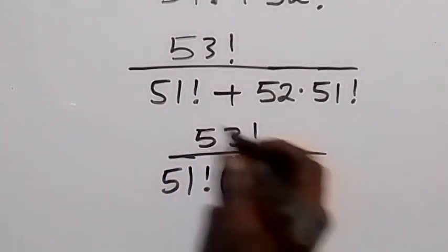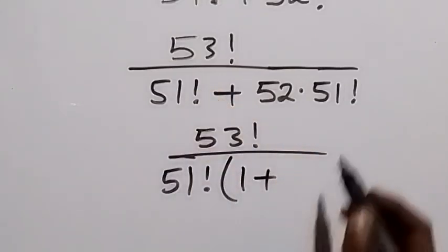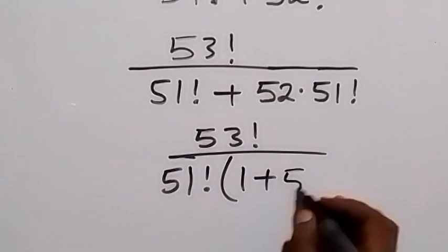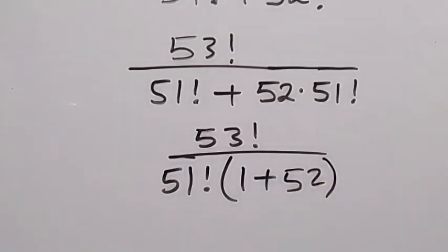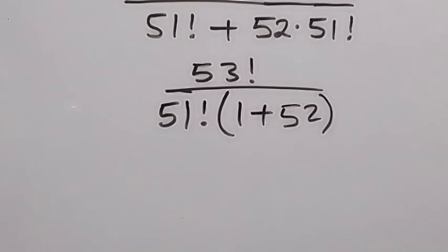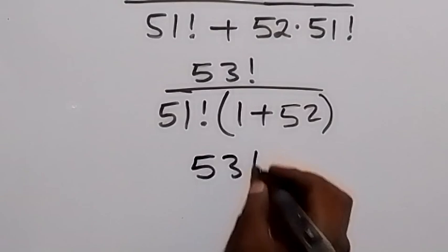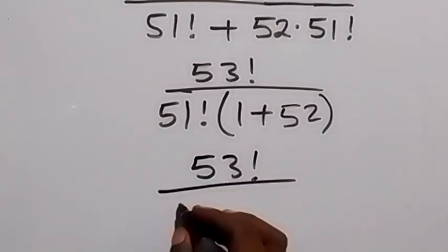What is left here will be 1, and plus what is left here is 52. Then from here we can add these together: 1 plus 52, that gives us 53. So we have 53 factorial divided by 51 factorial multiply by 53.